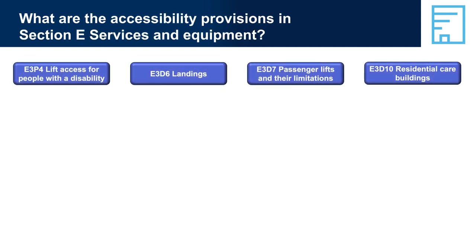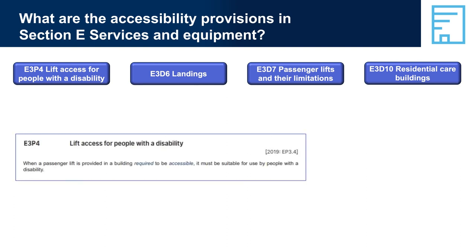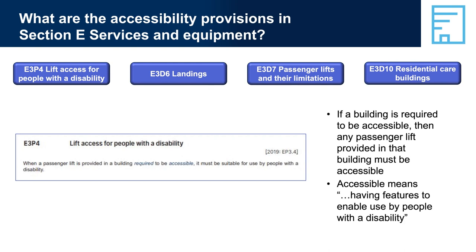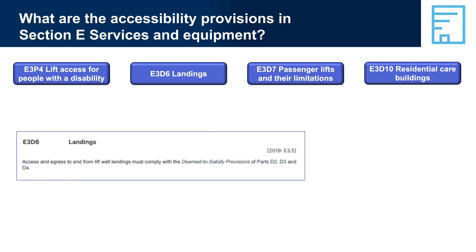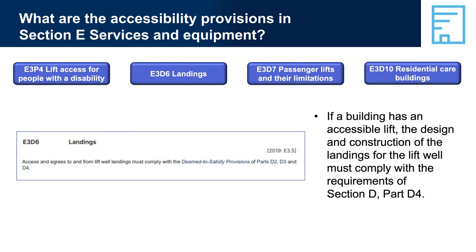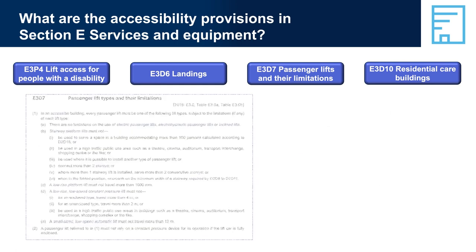What are the accessibility provisions in Section E, Services and Equipment? E3P4, Lift Access for People with a Disability: if a building is required to be accessible, then any lifts provided in that building must be accessible lifts. If a building that is required to be accessible has a passenger lift, then the landings for the lift have to comply with the accessibility requirements of Section D, Part D4. This will potentially affect things like the dimensions of the landing areas and the width of the corridors leading to the landing.